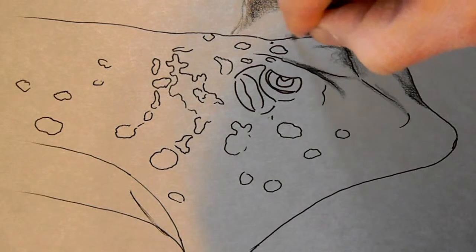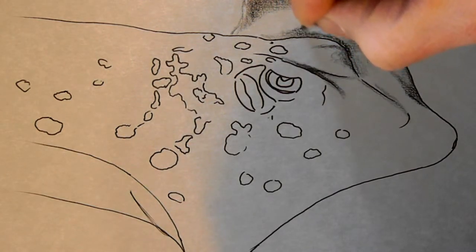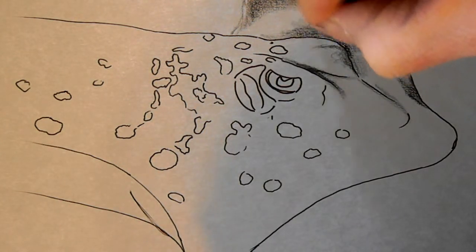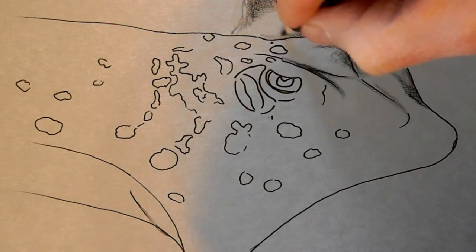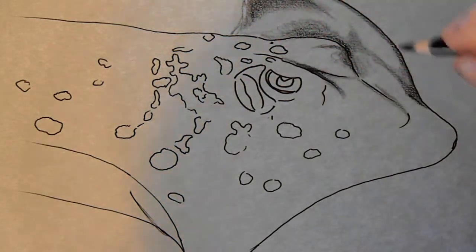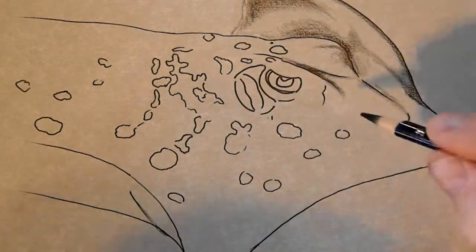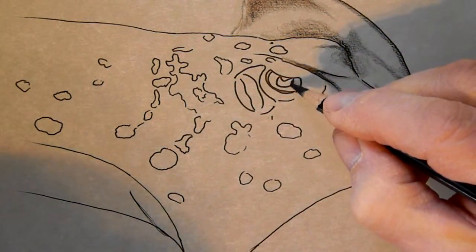So we're just kind of mimicking some shadows, building out tones to show the flex of the muscle in this stingray's wing. Let's work a little bit on an eyeball so you can kind of see what we're doing in here.